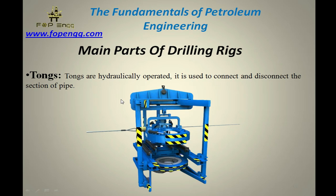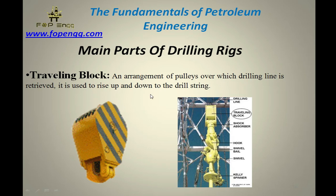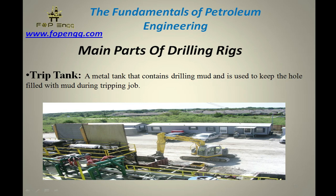Tongs — hydraulically operated and used to connect and disconnect sections of pipe. During run-in-hole we use tongs for proper torque. Traveling block — an arrangement of pulleys in which the drilling line is retrieved. It is used to raise and lower the drill string. This is the assembly of equipment in which the kelly, traveling block, and hook are connected, helping to run in hole and pull out of hole.